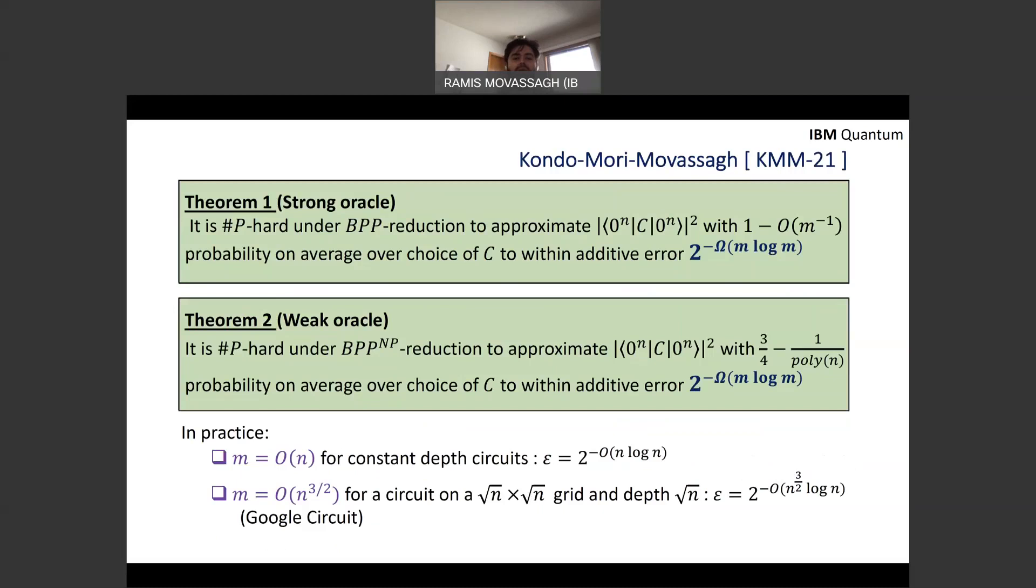So to summarize, theorem one of our work says that it is Sharp-P hard under a BPP reduction to approximate that probability with a very high probability. So one minus negligible in the number of gates for the average choice of circuits to within the additive error of 2^{-Ω(M log M)}. A theorem two basically uses a weaker oracle, but needs to assume a stronger classical reduction. So BPP to the NP machine is needed. So the success probability goes from almost one to a constant. And I remind you M is the number of gates.